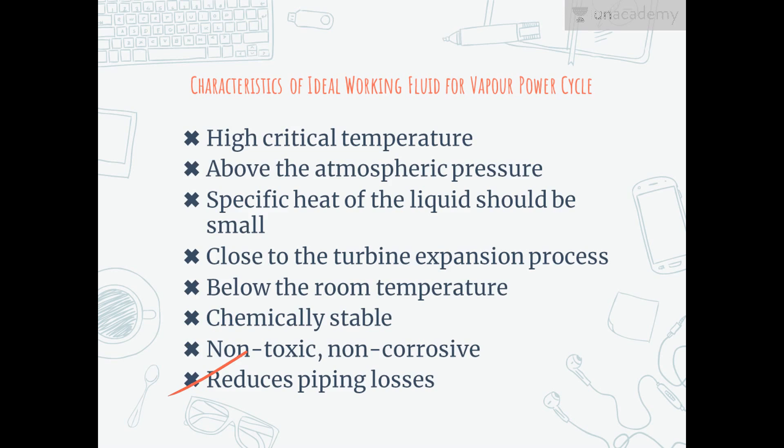Some superheat is desired to reduce piping losses and improve the turbine efficiency. The bounded area of the cycle is almost like a rectangle and its thermal efficiency is very close to the Carnot efficiency.